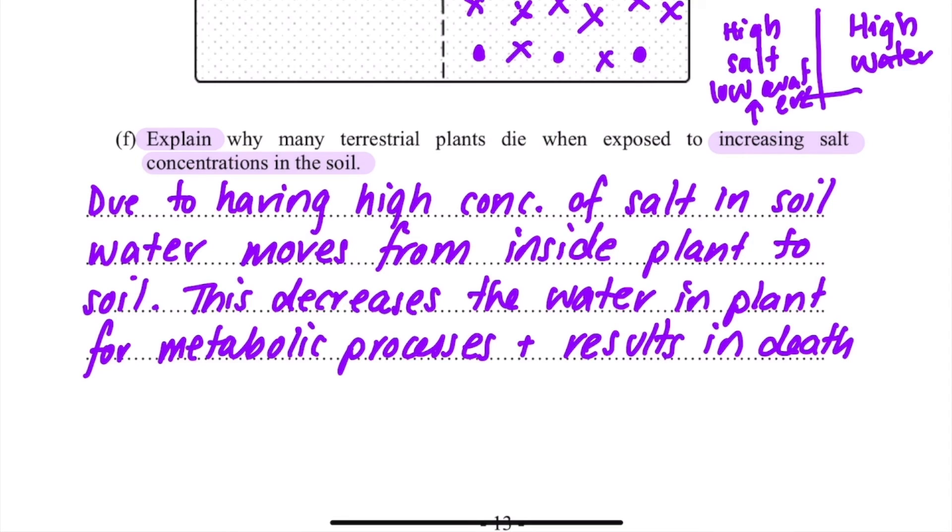To make my answer higher marked, I need to increase my biology vocabulary. So I need to write that osmosis is the process for removing the water, and the high concentration would be a hypotonic solution.